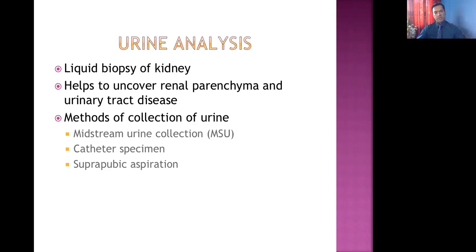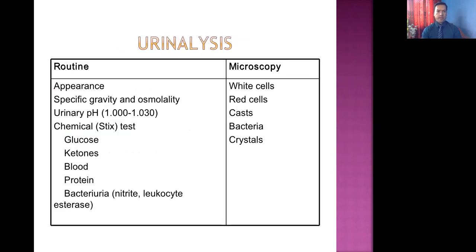There are three important methods of urine collection. The first and most commonly done is midstream urine collection — we have to describe the technique clearly to the patient. The second is catheter specimen, and the third is suprapubic aspiration. Catheter and suprapubic aspiration collect a very pure, uncontaminated form of urine, but midstream urine collection may be contaminated if the patient doesn't follow instructions properly.